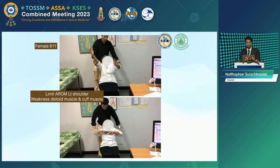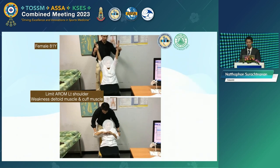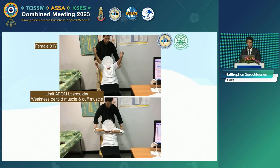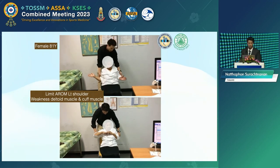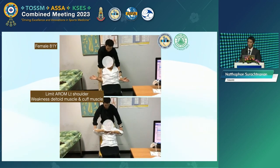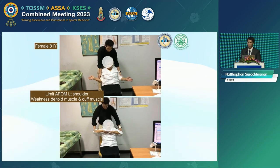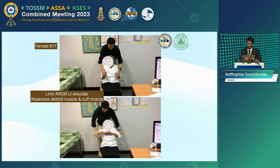This 81-year-old woman has limited active range of motion of the shoulder. The exam shows weakness of both the deltoid and the rotator cuff muscles. We need to clarify whether she has a neurological problem — such as double vision — or a structural problem.